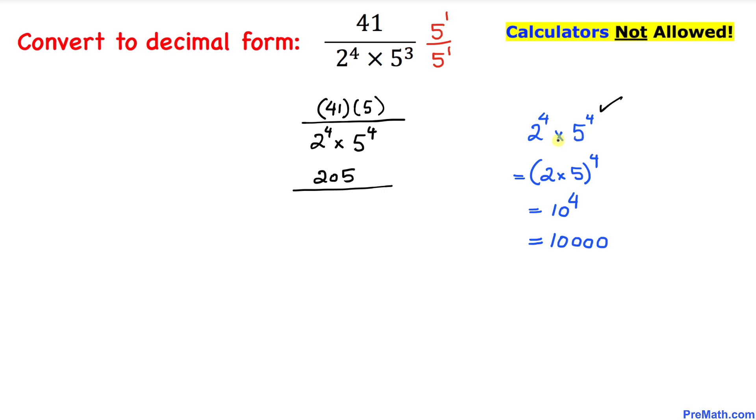Let's go ahead and manipulate this denominator part. We can write this as 2 times 5, whole power 4. 2 times 5 is 10 power 4. So 10 power 4 is the same as 10,000. Therefore, in the denominator I can replace it simply with 10,000, that means 1 with 4 zeros.